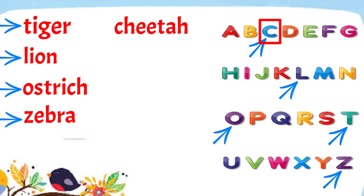Then the letter that comes next is L. So we have to put Lion next to Cheetah. The third one is letter O. So we have to put Ostrich next.